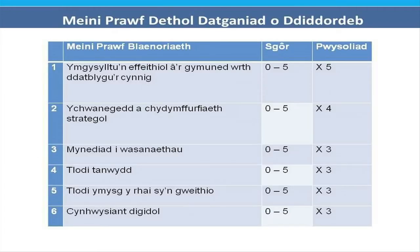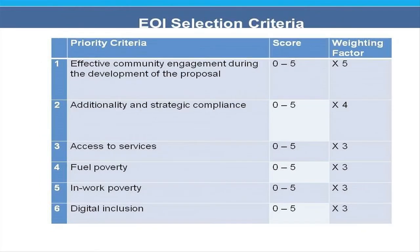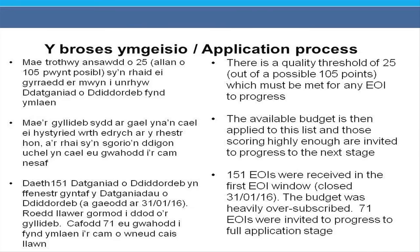There are six selection criteria, with a scoring range of 0 to 5 for each, and a weighting factor is then applied. The maximum possible weighted score is 105. The quality threshold is 25 points — any expression of interest must score 25 or above to progress to stage two, budget permitting. The available budget is applied to the ranked list, and those scoring highly enough are invited to progress.